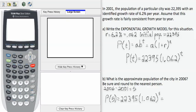Once I have my model, I can use it to predict the population at different stages in time. Particularly for part B in 2006, 2006 minus my start time of 2001 is 5 years. So to find the population in 2006, I need to compute P(5). I do that by computing 22,395 times 1.062 to the 5th.